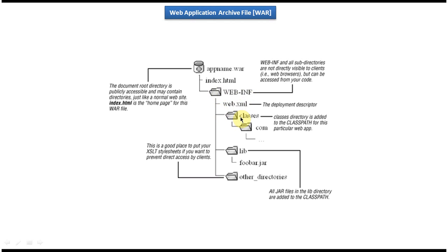Under WEB-INF we have a classes folder where we can put all project-related class files like business classes, domain classes, and DAO classes. Under WEB-INF we also have a lib folder where we can put all third-party JARs, for example Hibernate JARs or web service-related JARs. These JAR files will be added to the classpath at runtime. We can also create other directories under WEB-INF for things like XSLT style sheets or tags.